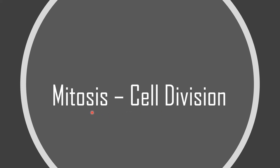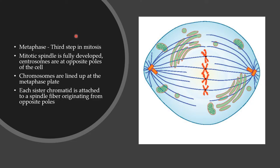Cell division or mitosis occurs in five stages. Metaphase is the third step in mitosis. In the image of a cell in mitosis, you can see chromosomes lined up in the center. On either end of the cell are condensed structures called centrosomes, from which originate the spindle-like fibers — the mitotic spindles — which are attached to the chromosomes.